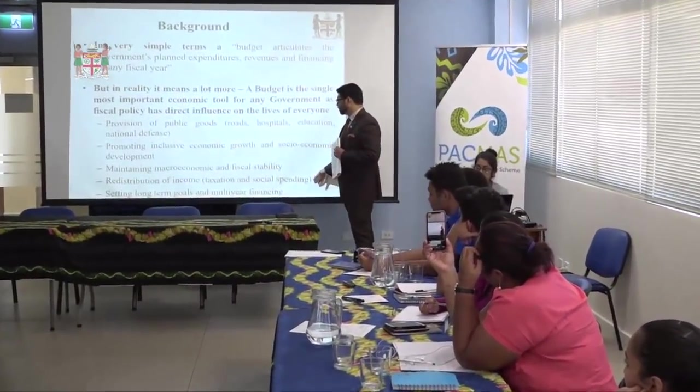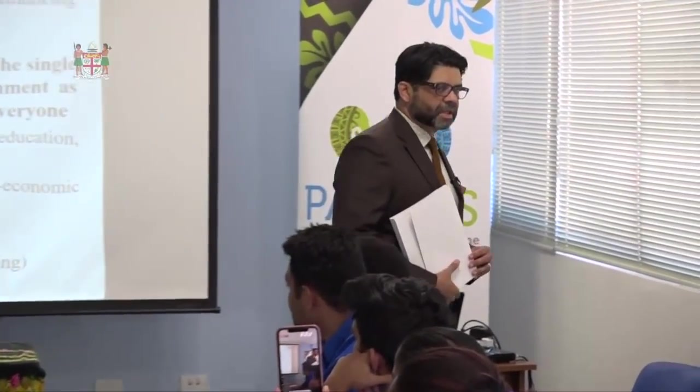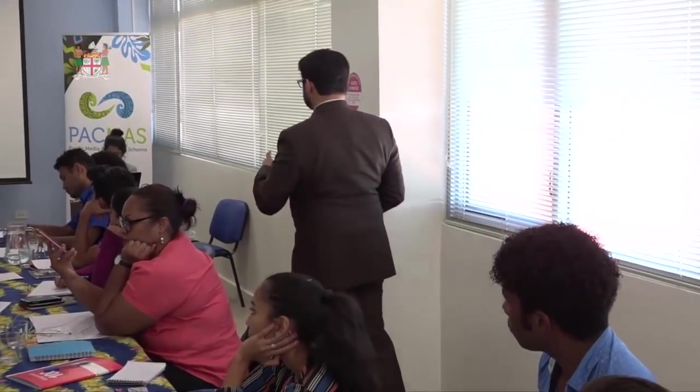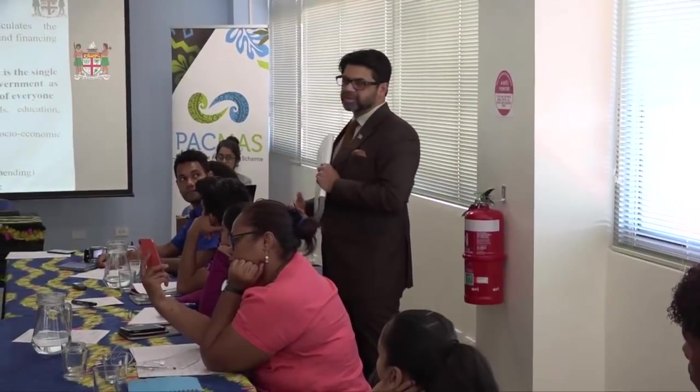Redistribution of income — taxation and social spending. When we collect taxes, it's actually one way of redistributing wealth. We have a progressive taxation system in Fiji, so the more you earn, the higher the taxation levels. When you collect those taxes, you use them for disability allowance, food vouchers for rural pregnant women, building homes for old people. That's redistribution of wealth — taking from people who can afford to pay taxes and giving to people who don't have any social network.